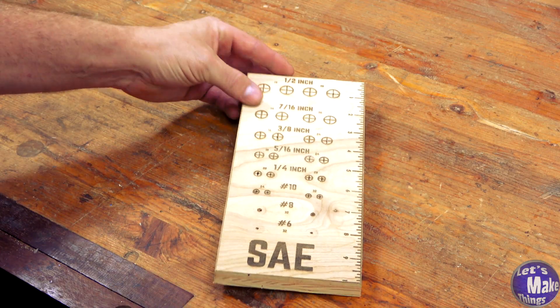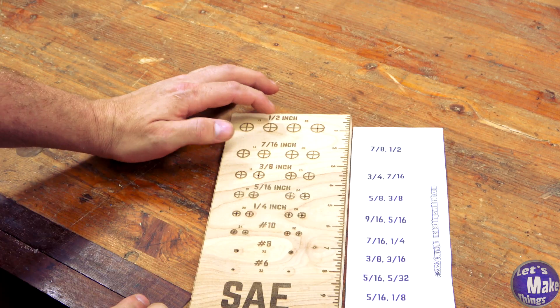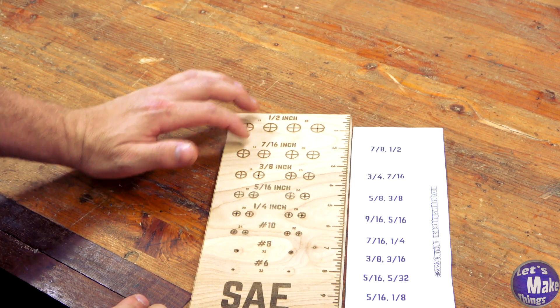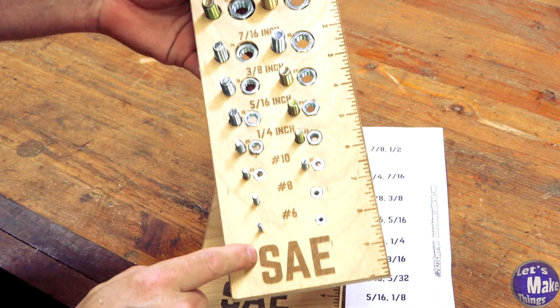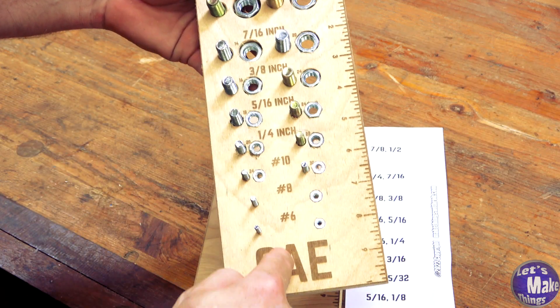Now that you've drilled all your holes out, you'll grab your paper again. You're going to decide which side you want your bolt and which side you want your nut. When I made mine, I did all the bolts on one side and the nuts on the other side, just like that.